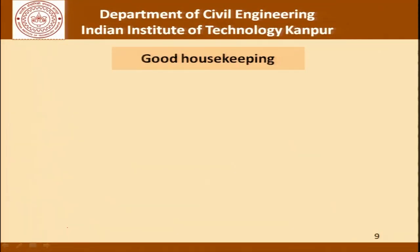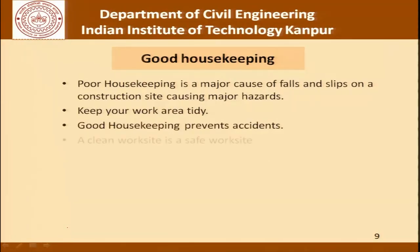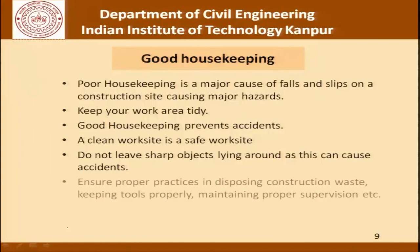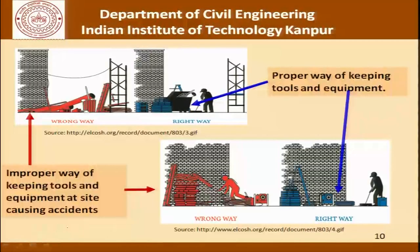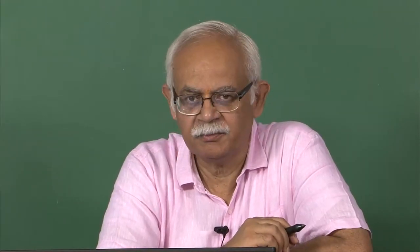Good housekeeping essentially involves keeping the construction site clean. It is a major cause of slips and falls and is a major hazard. It is important that the work area is kept tidy — a clean work site is a safe work site. Do not leave sharp objects lying around, and ensure proper practices in disposing of construction waste, keeping tools properly, and maintaining proper supervision. A cluttered site is very difficult to navigate and is the cause for accidents.